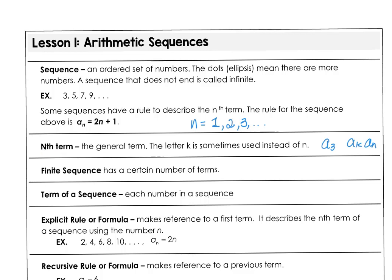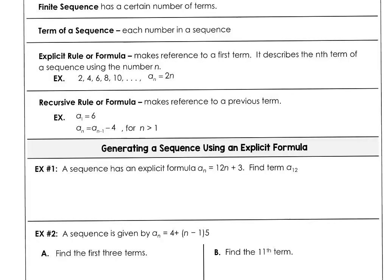When we have a finite sequence, that just means the list stops and there's a certain number of terms. Let's look at some formulas. We may have a recursive rule or we may have an explicit rule. The explicit rule makes a reference to the first term, but a recursive rule makes a reference to the term previous to the one that you have.